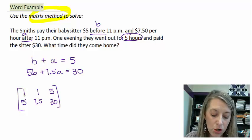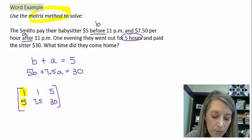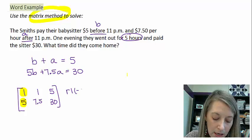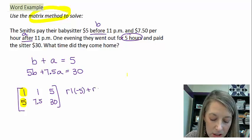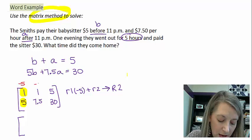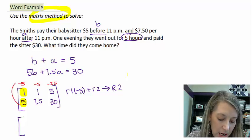All right, to solve this using matrix method, I want a 1 right here, which I already have done. So my next step is to get a 0 there. So I do that by multiplying row 1 times a negative 5 and adding it to row 2, and that goes into my new row 2. So scratch work, negative 5, negative 5, negative 25. Add those two guys together.